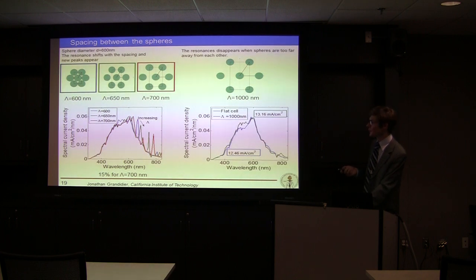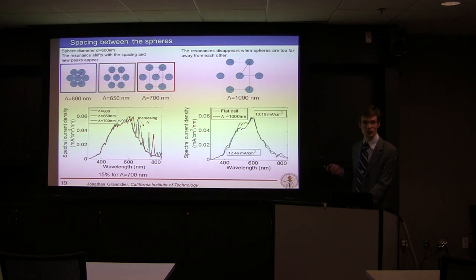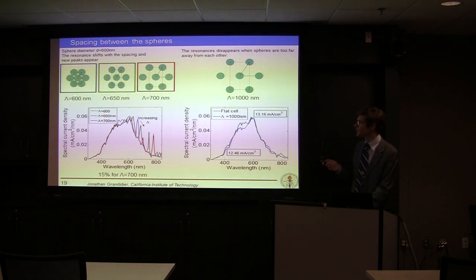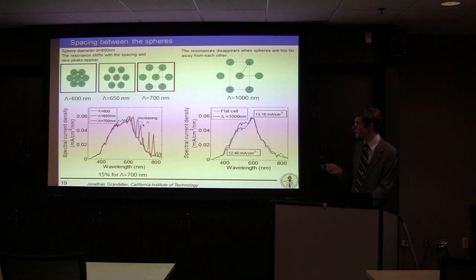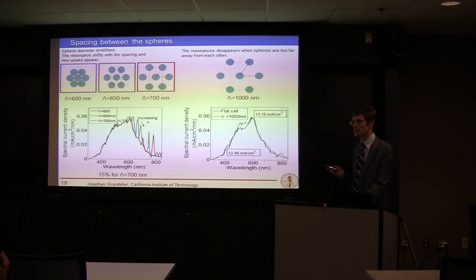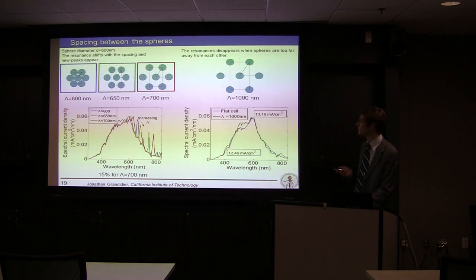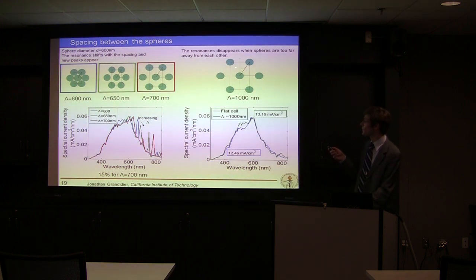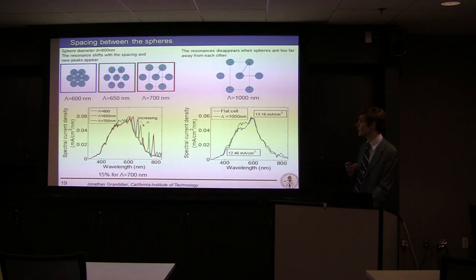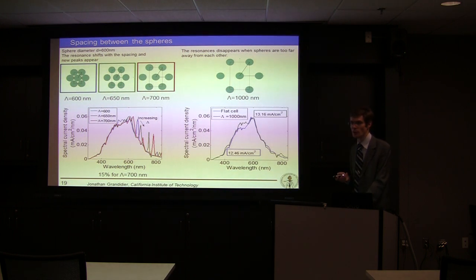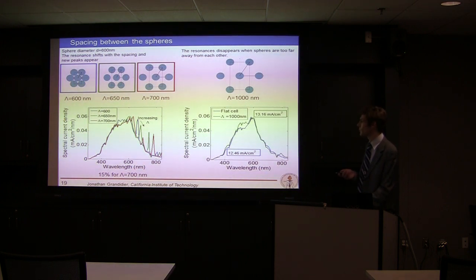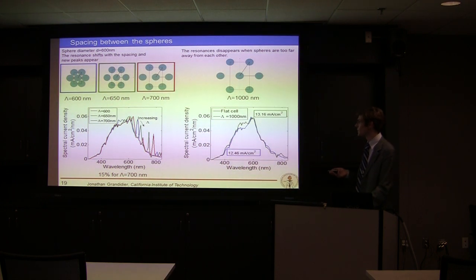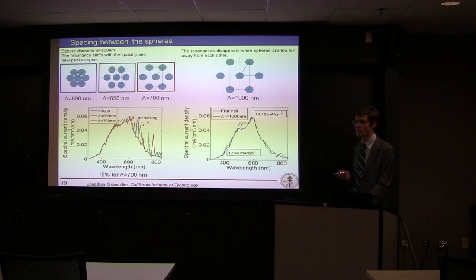If we have a slight modification of the spacing between the spheres — varying the spacing between 600 and 700 nanometers — we can see that the peak is shifting, showing that the resonant mode shifts due to the different characteristics of the structure. If the spheres are too far away from each other, we no longer excite the resonant mode of this photonic crystal-type structure, and the shape of the spectral current density becomes very similar to that of a flat solar cell.